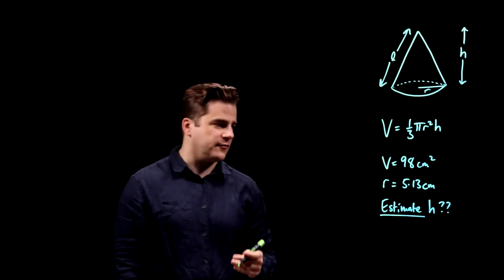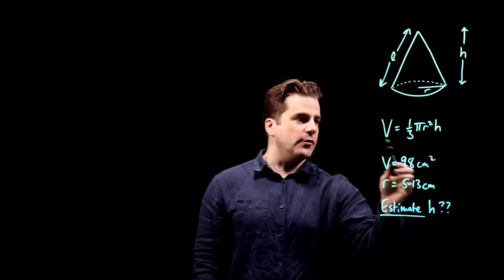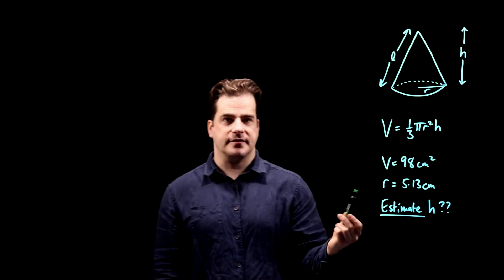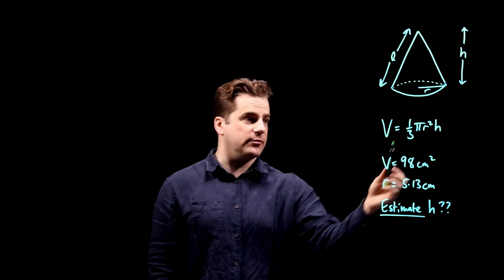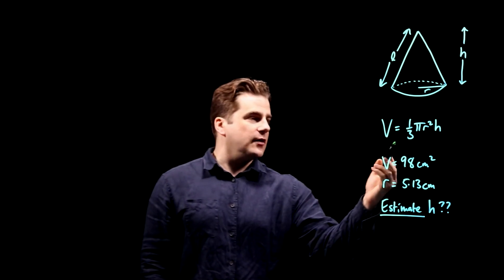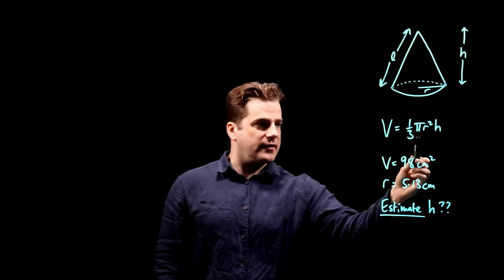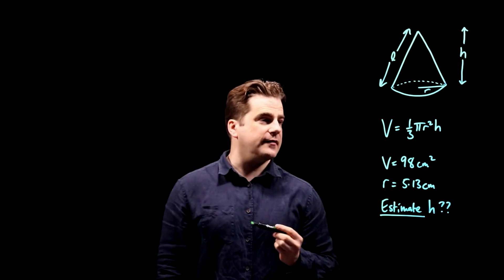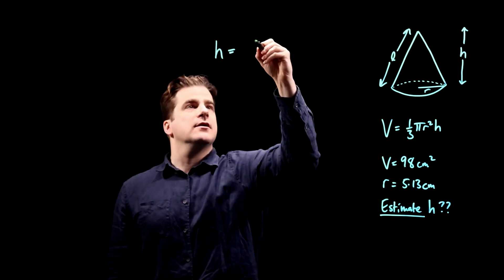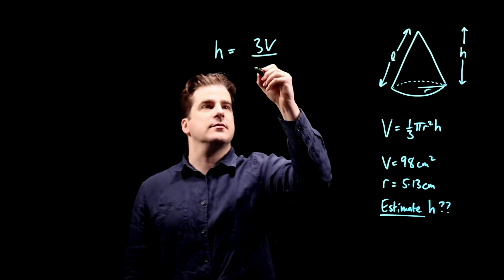Right, we have to estimate h. So here's the formula. First thing to do is to get h by itself. In other words, rearrange the formula to make h the subject. So multiply both sides by 3 and divide both sides by pi r squared, and we get that h is equal to 3V over pi r squared.